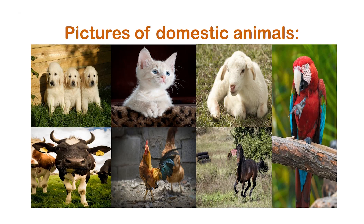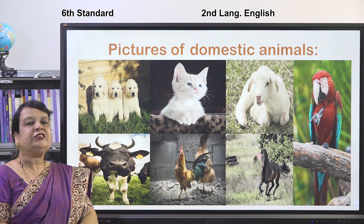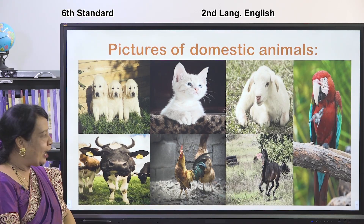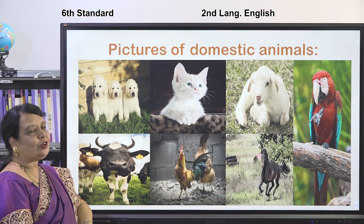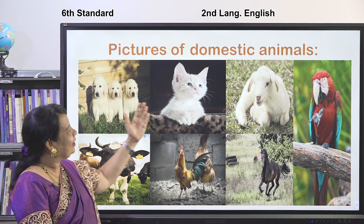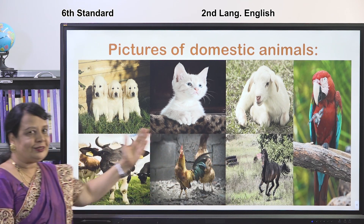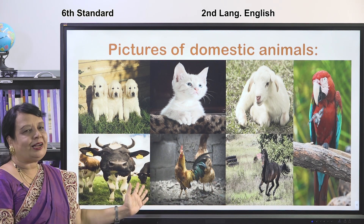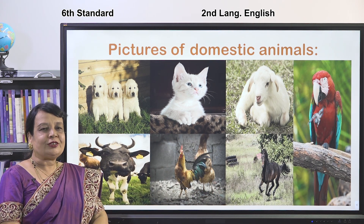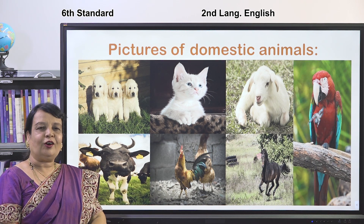Can you identify them? This is a lamb — the young one of a sheep is called a lamb. Here are puppies — the young ones of a dog. Also: cat, lamb, parrot, bull, cock, and horse. All these are animals we keep and look after at home. These are called domestic animals.